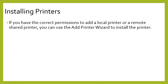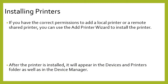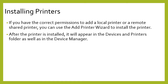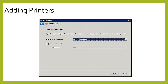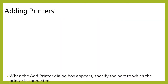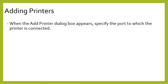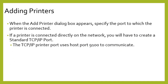When installing printers, if you have the correct permission to add a local printer or a remote shared printer, you can use the Add Printer Wizard to install the printer. Once installed, the printer will appear in the Devices and Printers folder as well as Device Manager. When the Add Printer dialog box appears, specify the port to which the printer is connected. If the printer is connected directly to the network, you will need to create a standard TCP/IP port. The TCP/IP printer port uses host port 9100 to communicate.